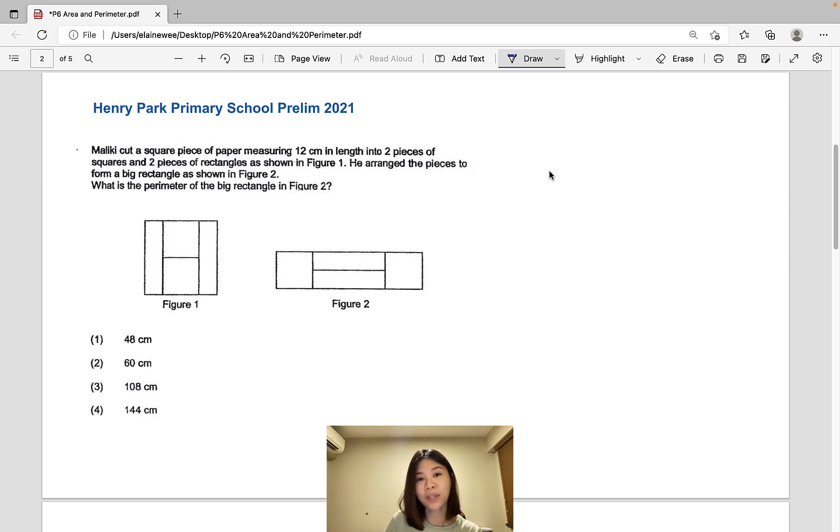The only information we are provided is that the length of the original square is 12 cm. So let's write that down first. Other than that, we are not really provided with any other lengths. So what we need to do is to study the relation among all the different lengths in the shape.